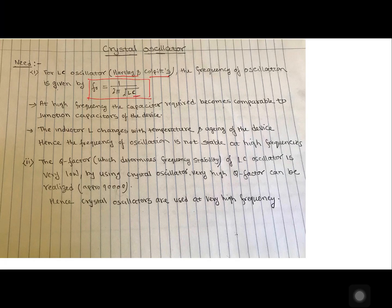In this, C is the capacitance and L is the inductance. Now at very high frequency this capacitor becomes comparable to junction capacitance of the device. So which devices we are talking about? The BJTs, MOSFETs etc used in design of amplifier circuit. Now this inductor also changes with temperature and aging. So at high frequency, these oscillations provided by LC oscillators are not stable.